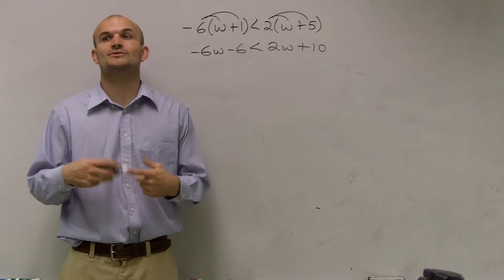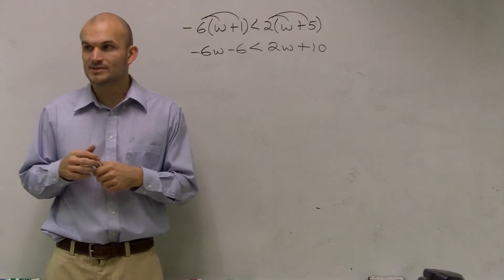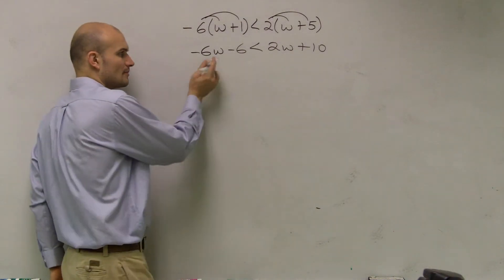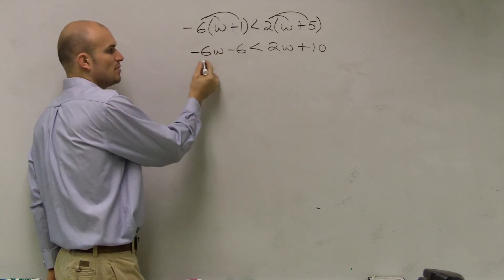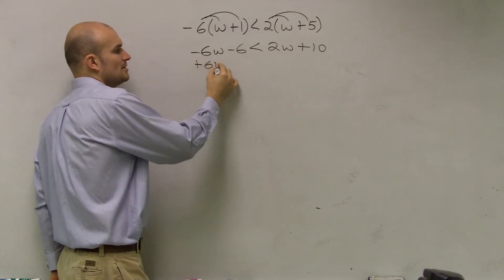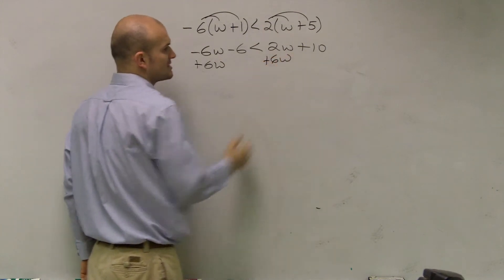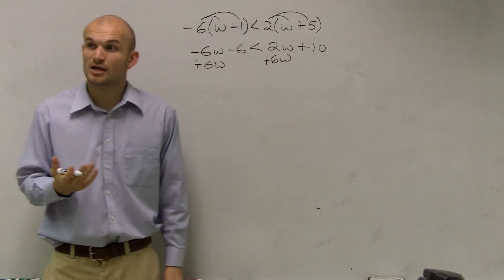Because remember, if you have to divide or multiply by negative numbers, you always have to flip the sign, and then you could forget about that. So the best thing is to get rid of our smaller variable, which is negative 6w. So what I'm going to do is I'm going to add that. And make sure you add that to both sides of your inequality.